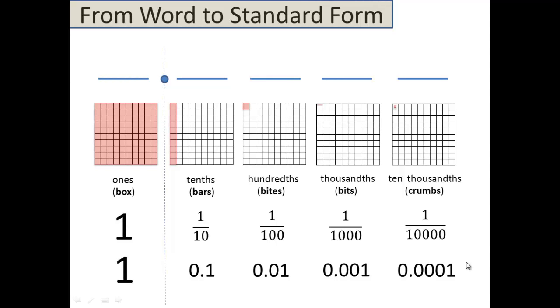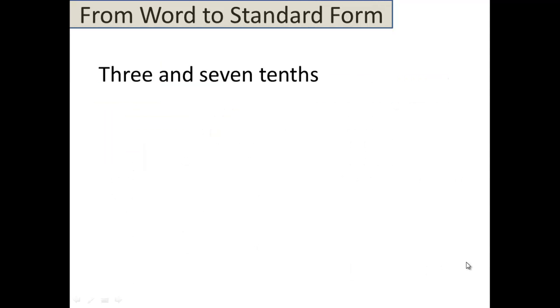Alright, so here we go. Here is a decimal written in word form: 3 and 7 tenths. The steps are pretty simple and they're kind of like something you would have done last year with Try Big Mac Thursday. But in this case, what you're going to do is actually underline the place name and that will tell you how far out you're going to go into decimal land.